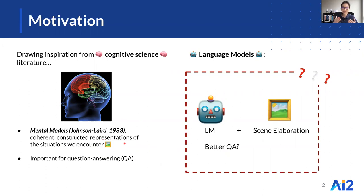When people answer questions about a specific situation, cognitive science suggests that they form a mental picture of that situation. This work investigates the question: will language models answer such questions more accurately if provided with additional details about the question situation?